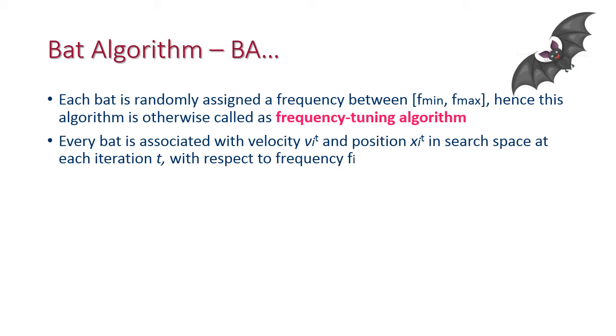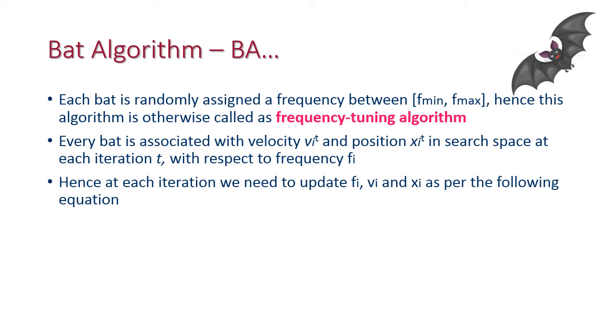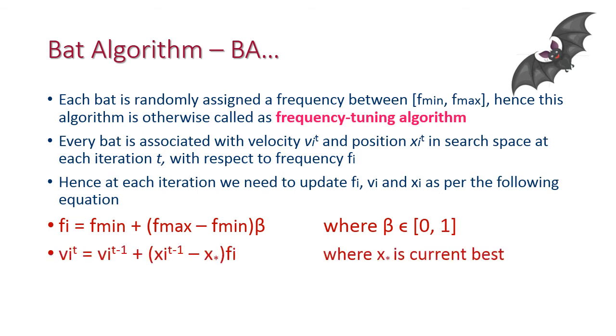Each bat is associated with velocity and position in a search space at each iteration t with respect to assigned frequency. Hence at each iteration, we need to update frequency, velocity, and position as per the following equations. First, current frequency equals minimum frequency plus (maximum frequency minus minimum frequency) times beta, where beta is a random value between 0 and 1. Next, current velocity equals previous velocity plus (previous position minus current best position) times current frequency. And current position equals previous position plus current velocity.